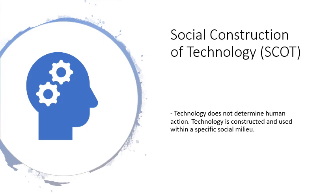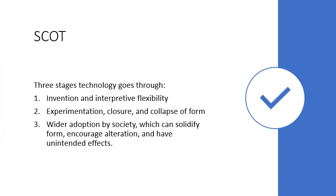The social construction of technology is both a theory about how technology is developed, adopted, and eventually affects society, and also a methodology. You can follow certain steps to analyze whether a technology is a success or failure. SCOT posits that there are basically three stages technology goes through in its lifecycle. The first is that technology is invented, and during this early time there's a lot of interpretive flexibility with how it is used.